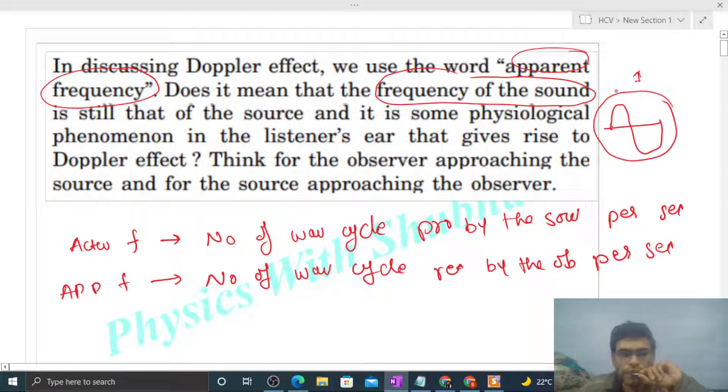Now you can see, actual frequency of sound completely depends on the source because the source is producing the waves. How many waves are produced in one second? That is completely dependent on the source. So we can say actual frequency of sound is nothing but the frequency of the source itself.